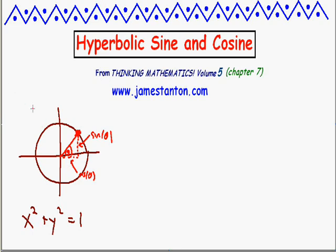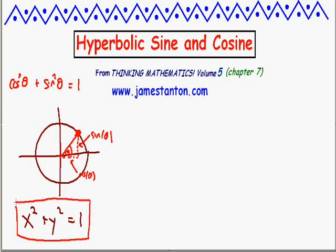Since the circle follows x-squared plus y-squared equals 1, these points must satisfy cosine-squared theta plus sine-squared theta equals 1. These are the circular functions — they parametrize points on a circle at different angles theta. You can play this game with different shapes; if you look at my video on squine and cosquine, you can actually parametrize the square this way and call those the square functions.